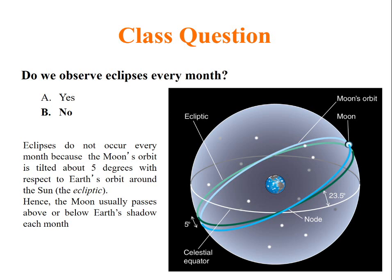Hence, Moon usually passes above or below Earth's shadow each month. Seeing a lunar eclipse every month is not possible.